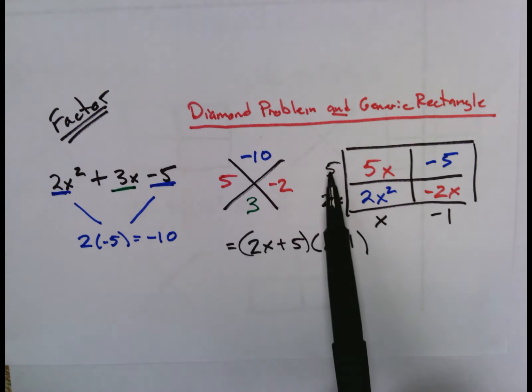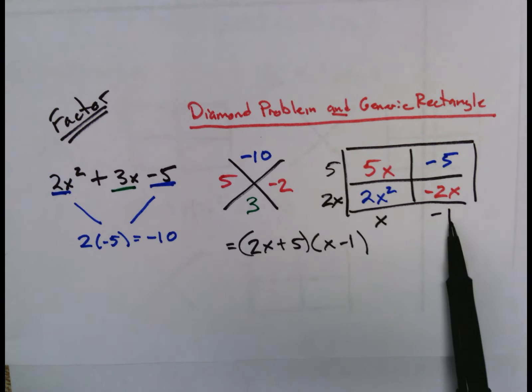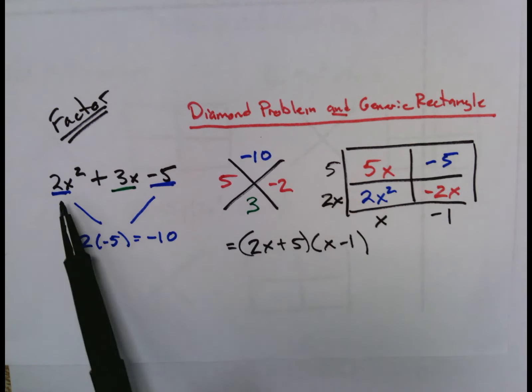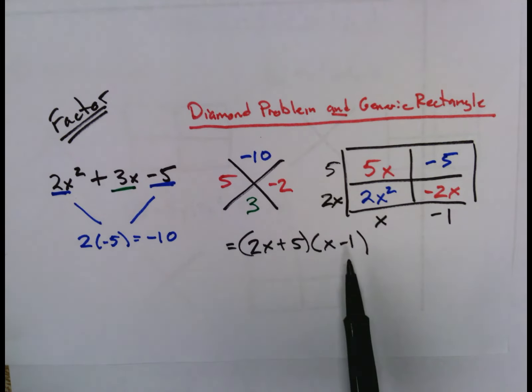That has to be a 5 at the top and a -1 down here in order to get a -5. Thus, our factors of 2x² + 3x - 5 are (2x + 5)(x - 1).